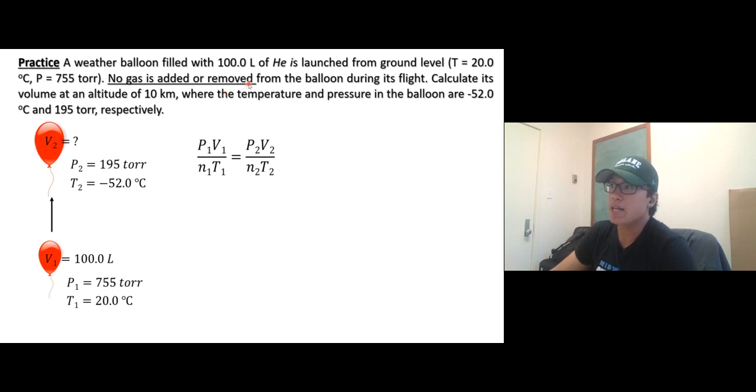the same—N1 equals N2. No gas is added or removed from the balloon during its flight. Calculate its volume, so we're looking for V2 at an altitude of 10 kilometers where the temperature and pressure in the balloon are -52°C and 195 torr.